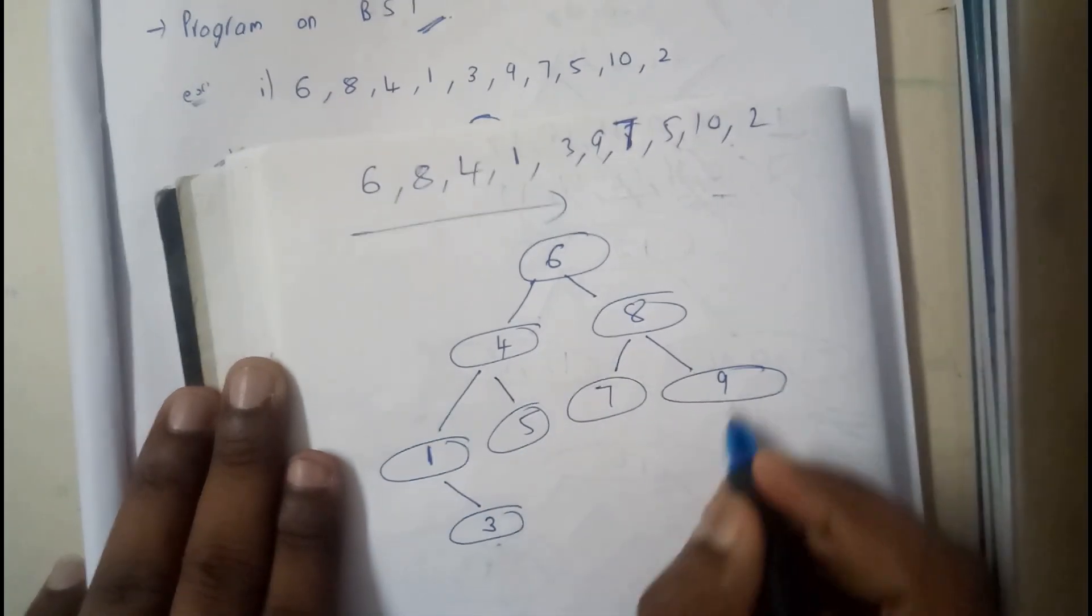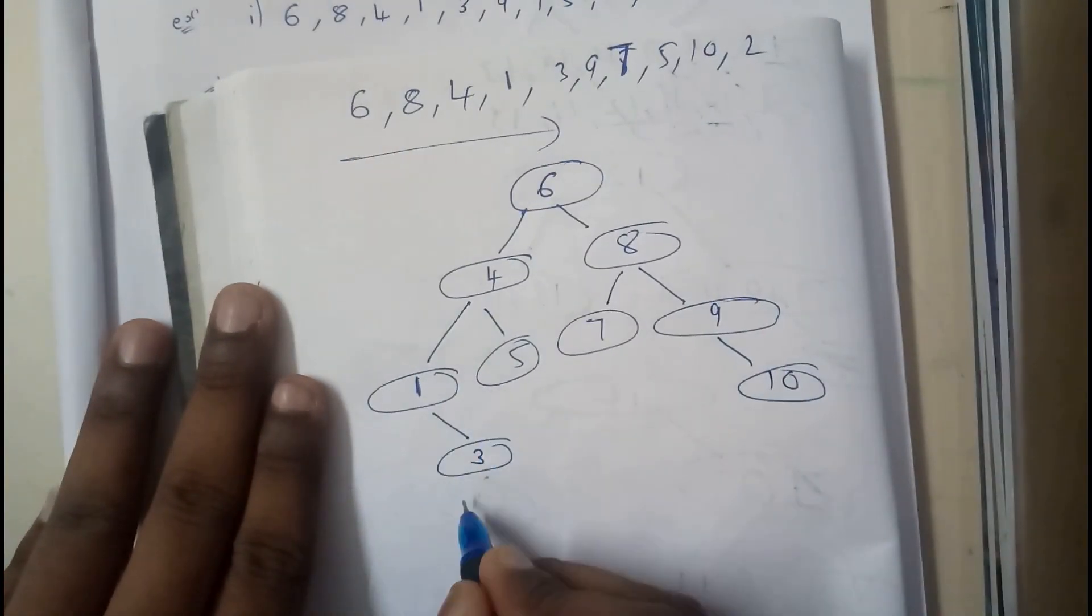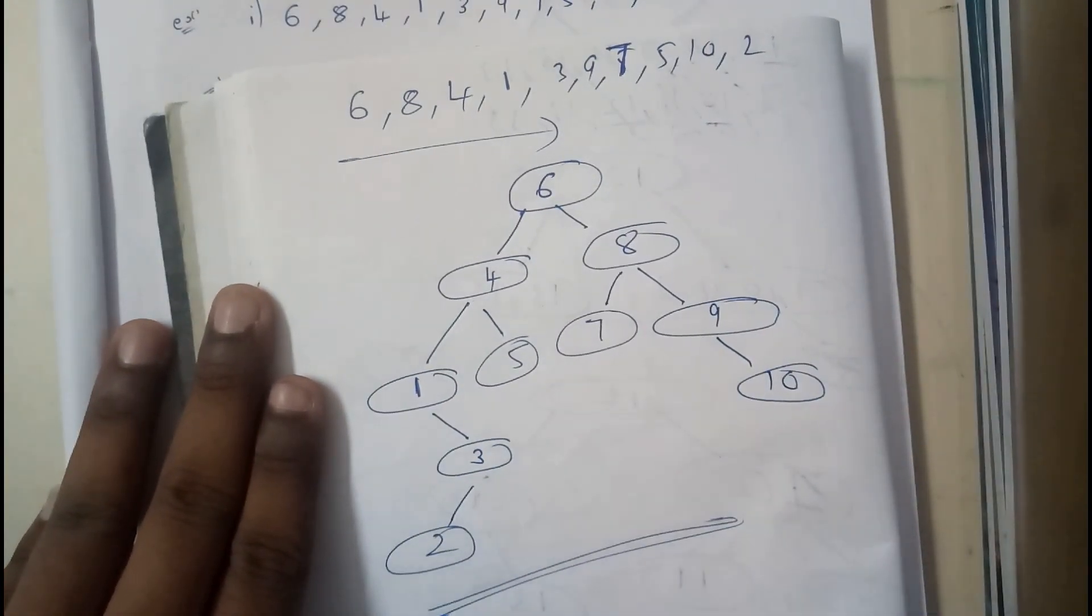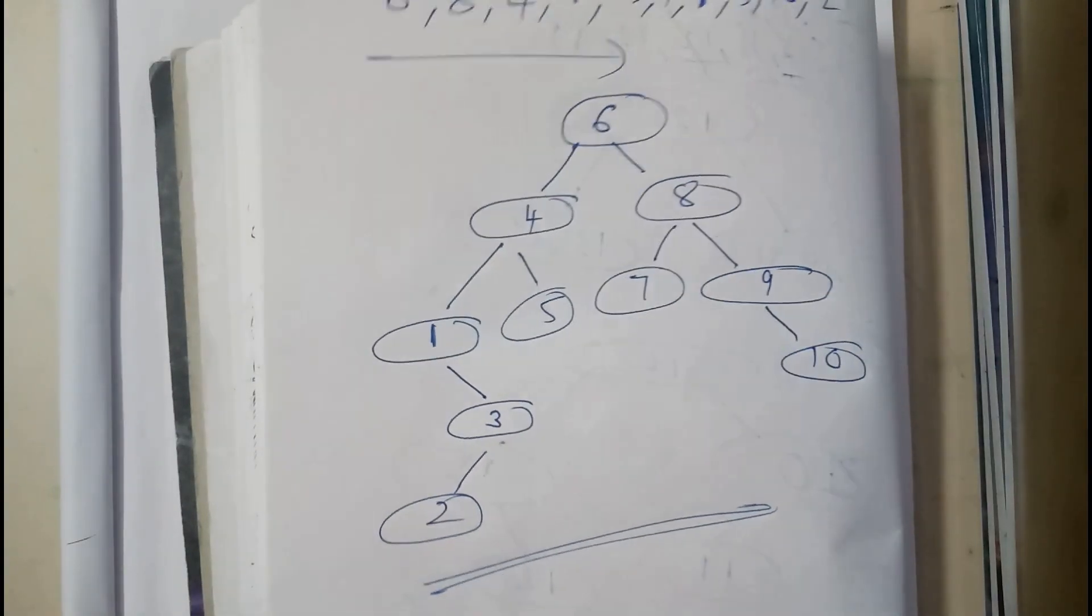10, 10 is greater than 9. 2 will be here. So this is our binary search tree. Sorry for that. So now I hope everyone got a small idea on this.